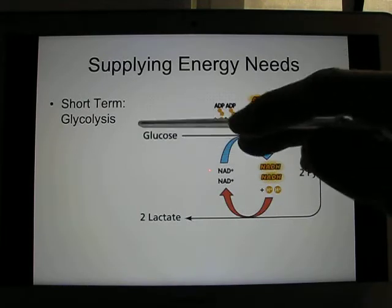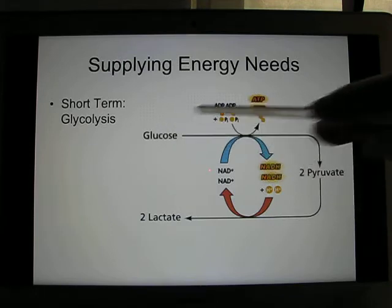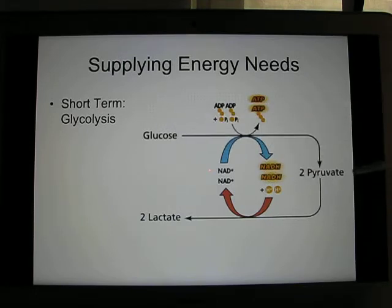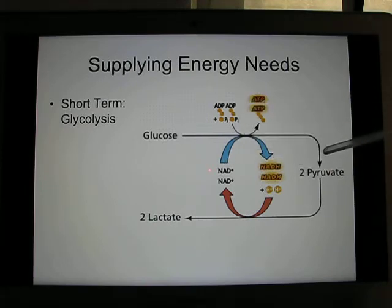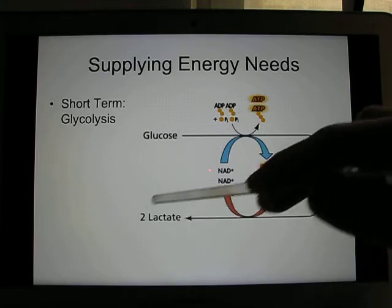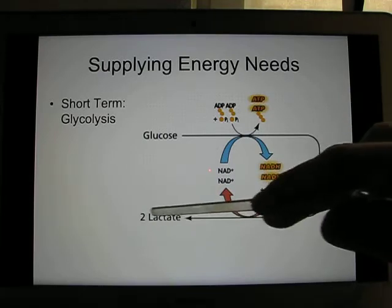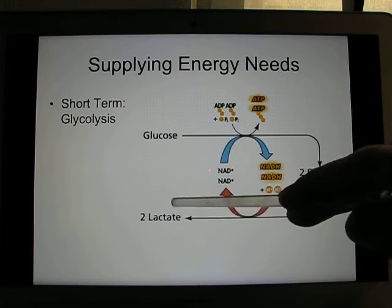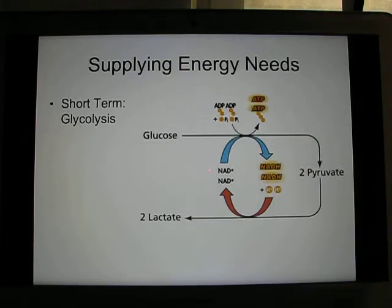You take glucose and cut it in the middle. Glucose is a six-carbon molecule. It turns into two pyruvate, which is a three-carbon molecule, and it produces two ATP. This process can also produce lactic acid. So when you exercise too much, you feel muscle soreness and muscle weakness — that's because of the lactic acid, and that's due to glycolysis.